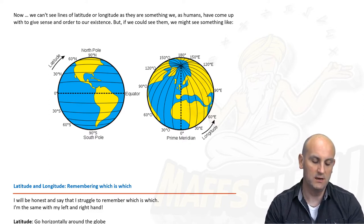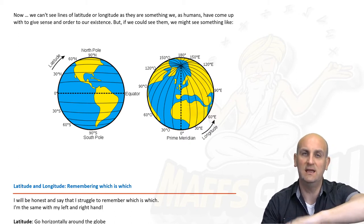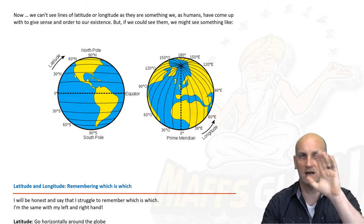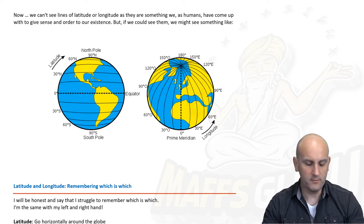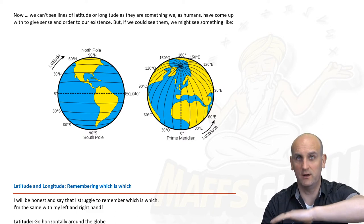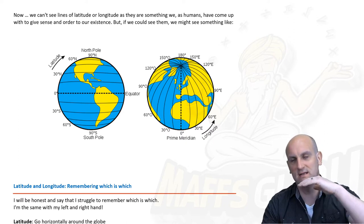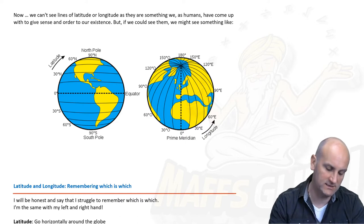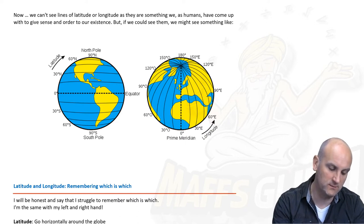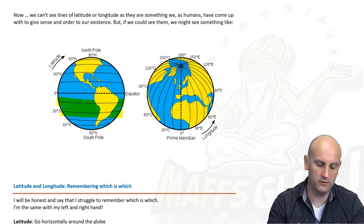First things first — the Earth can be split up into lines that go horizontally and vertically around the globe. The lines that go across the globe horizontally are latitude lines. These lines are going horizontally around the Earth.